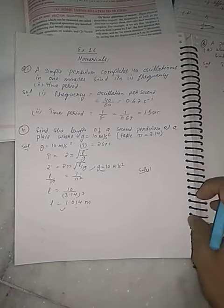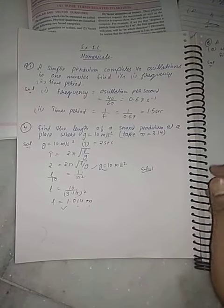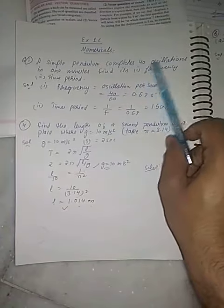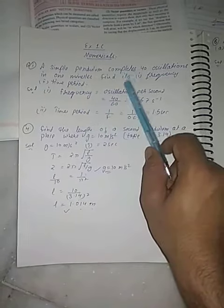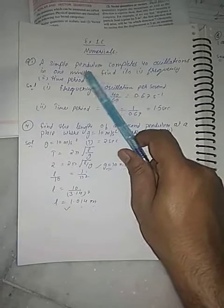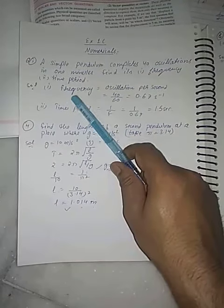Okay friends, these are the solutions of exercise 1C numericals. I am giving the solution of certain numericals which will help you out to do the rest of them. Now, a simple pendulum completes 40 oscillations in one minute. Find its frequency and time period.